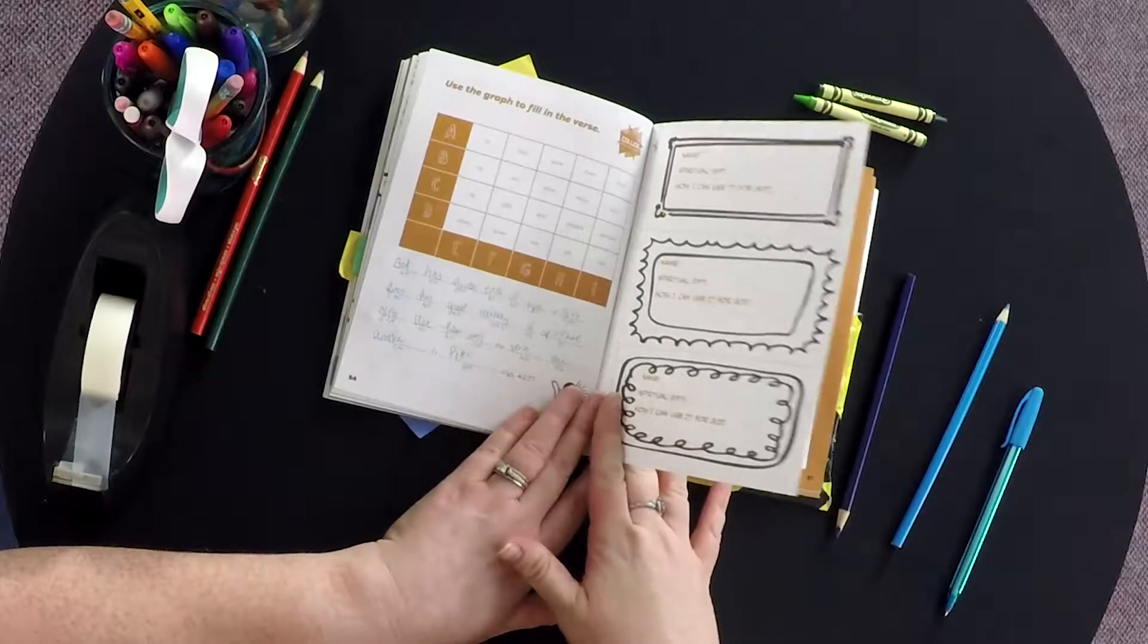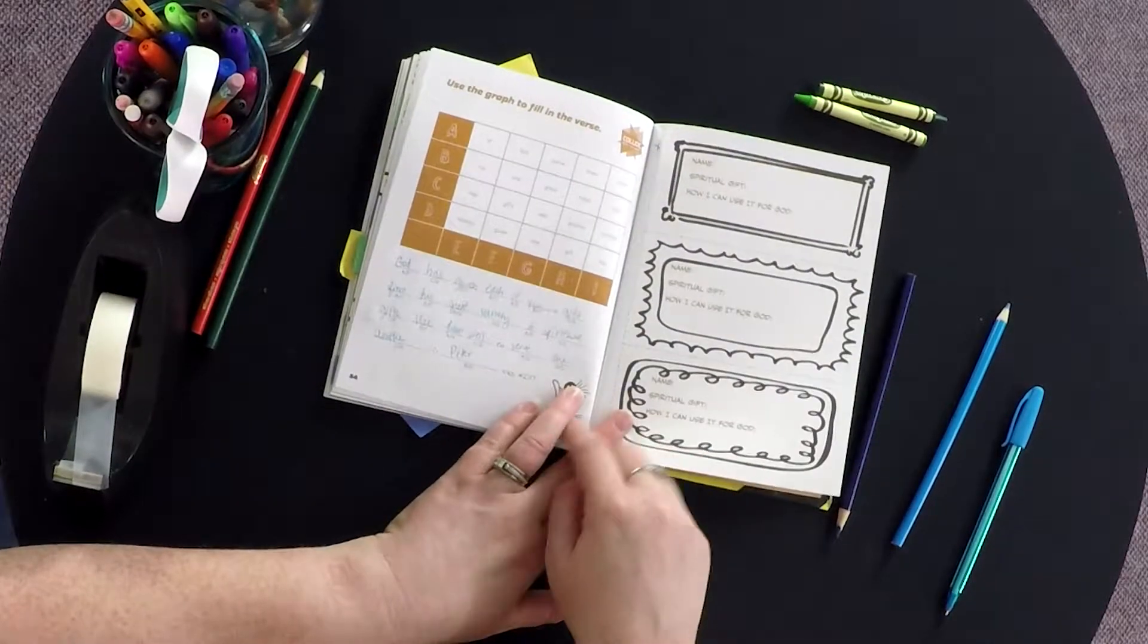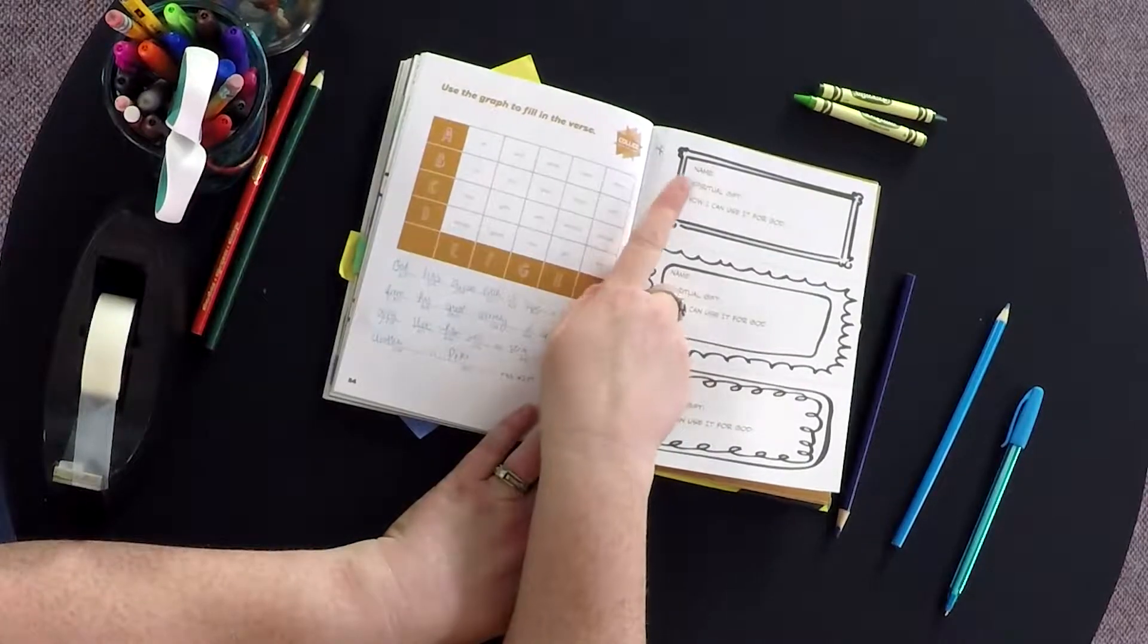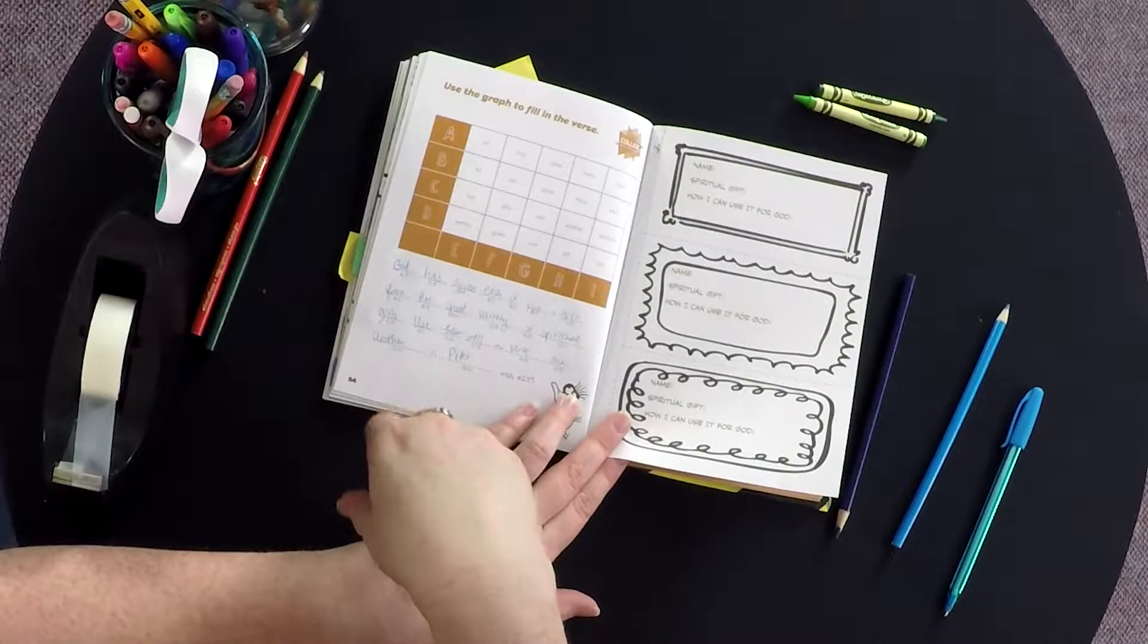In the next activity, they're going to cut out these cards and give them to three different people in class. That person will write their name, a spiritual gift, and how they can use it for God. Then they'll return them back to the original owner.